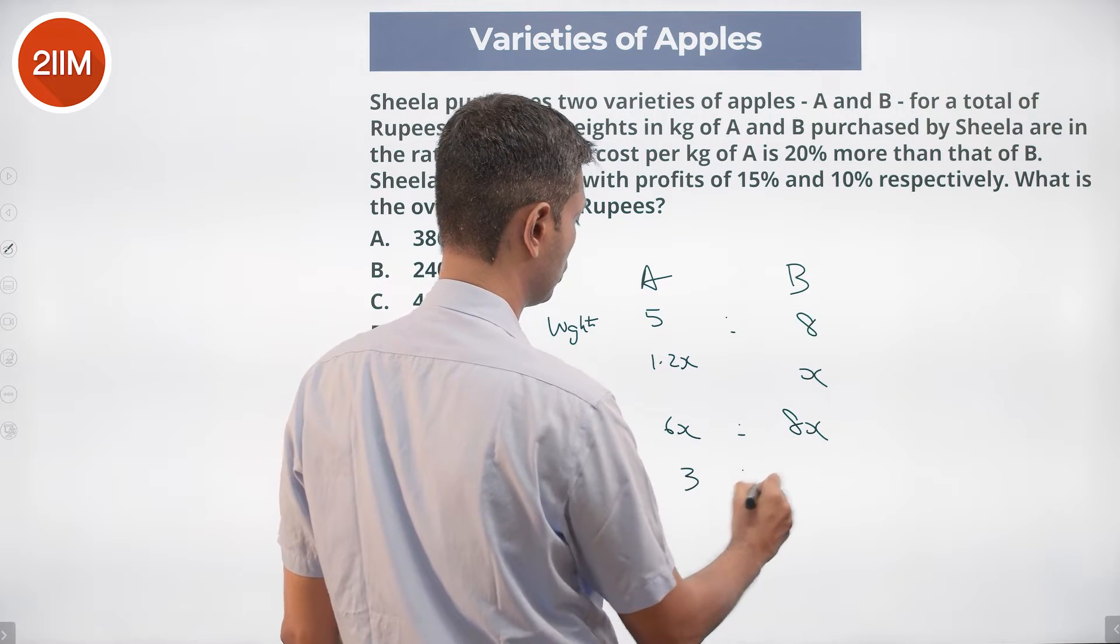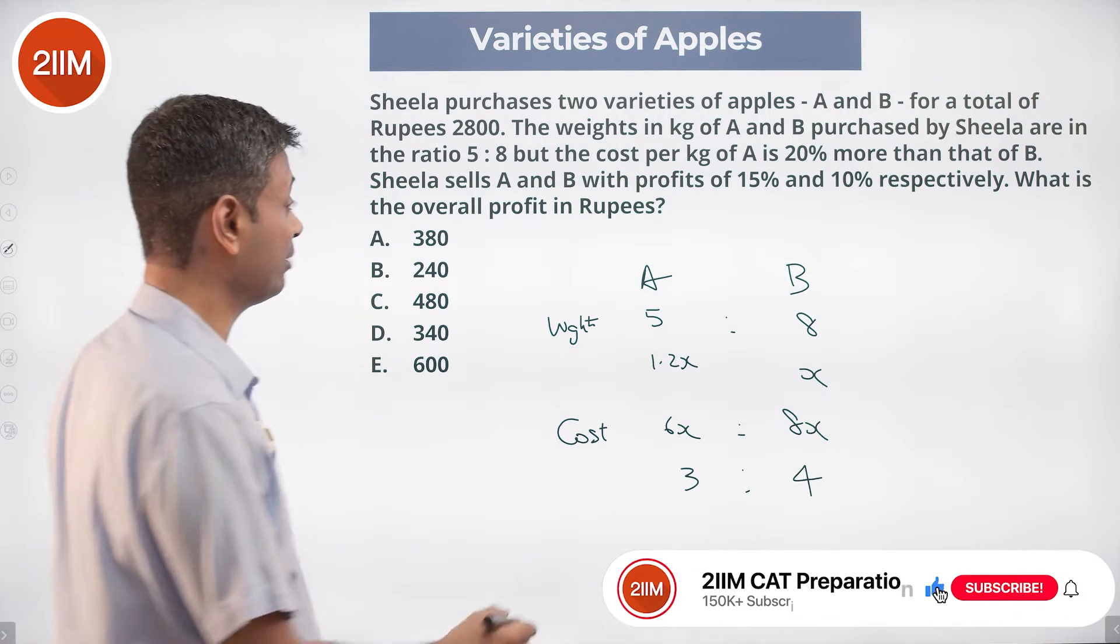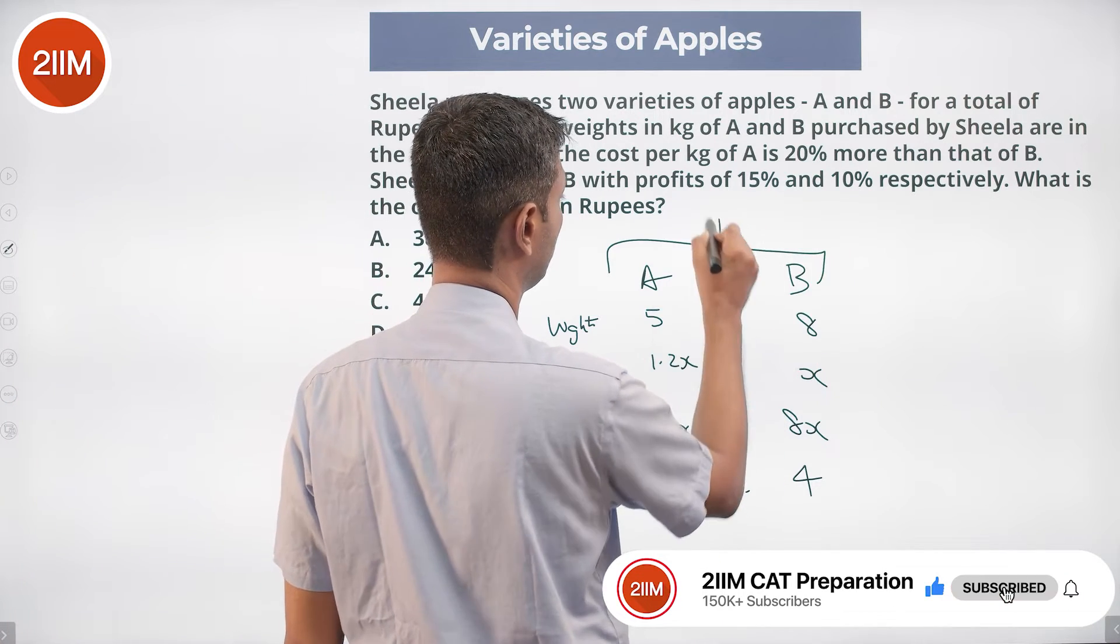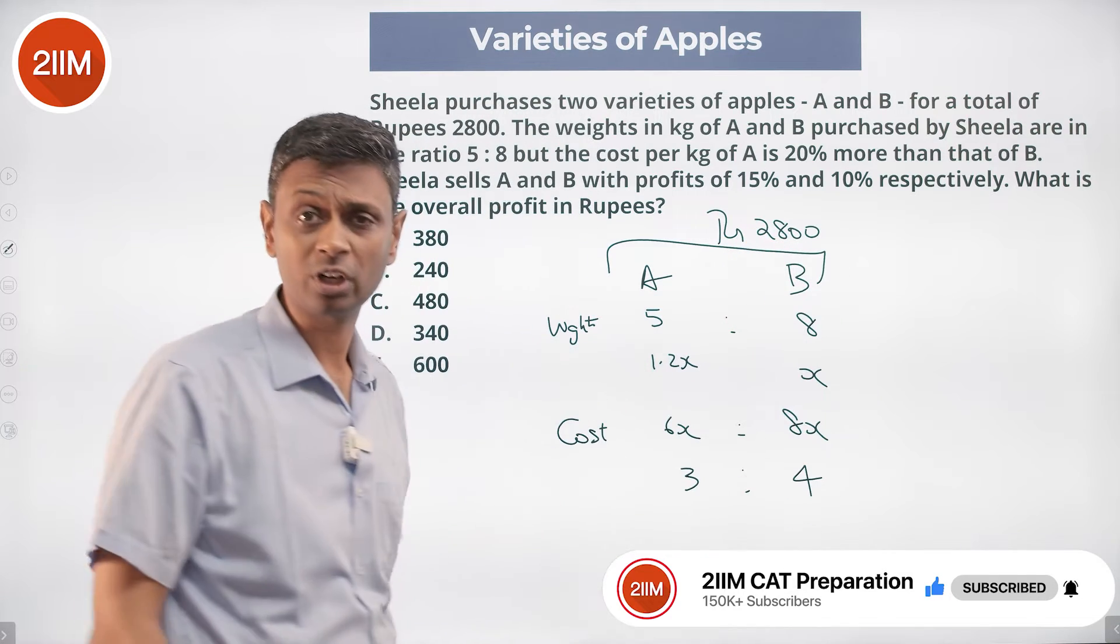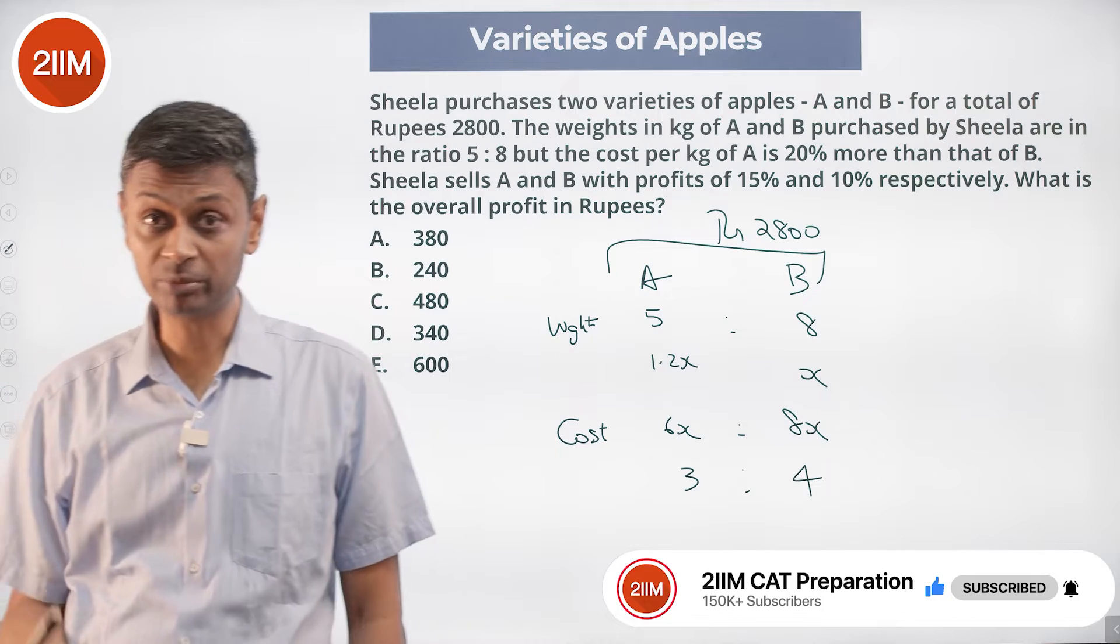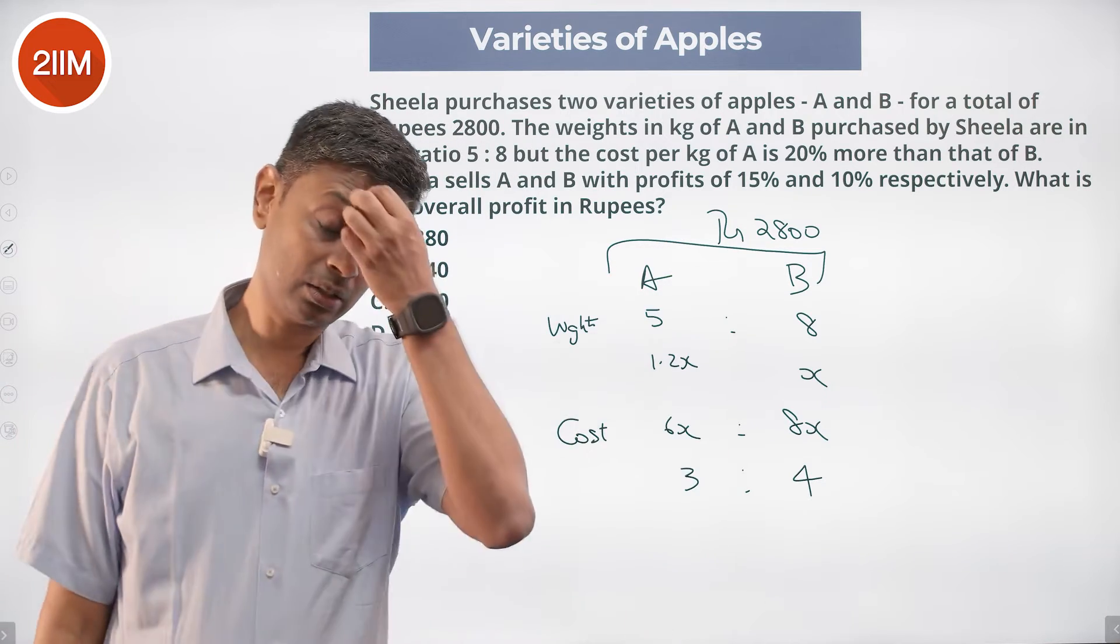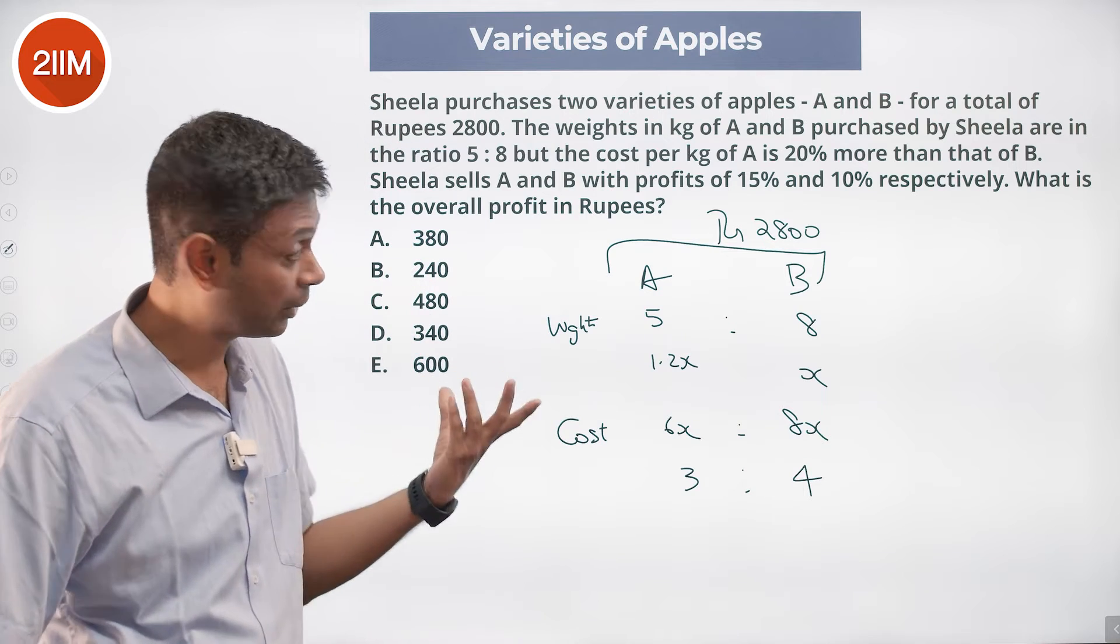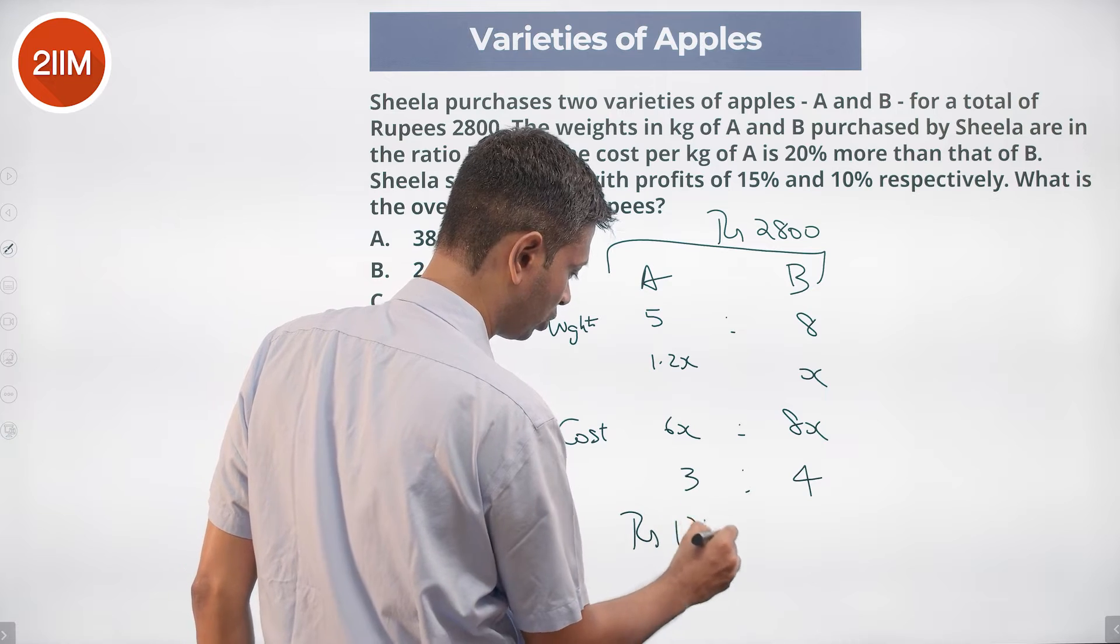The total cost is 2800. The moment we see the ratio 3:4, life becomes easy. 3 plus 4 is 7, and 7 corresponds to 2800. So 2800 divided by 7 is 400. This means A costs 3 times 400, which is rupees 1200, and B costs 4 times 400, which is rupees 1600.